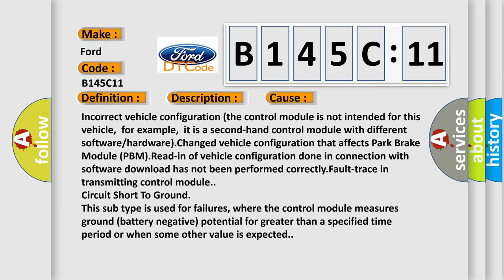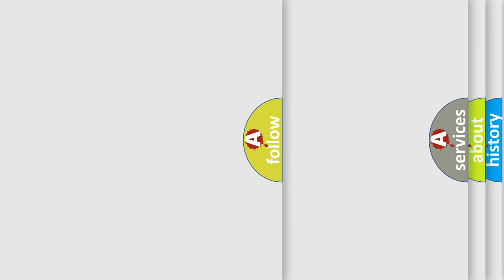This diagnostic error occurs most often in these cases: incorrect vehicle configuration where the control module is not intended for this vehicle. For example, it is a second-hand control module with different software or hardware. Changed vehicle configuration that affects Park Brake Module PBM. Vehicle configuration done in connection with software download has not been performed correctly. Fault trace in transmitting control module circuit short to ground. This subtype is used for failures where the control module measures ground battery negative potential for greater than a specified time period or when some other value is expected.